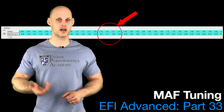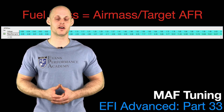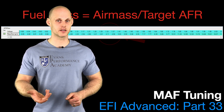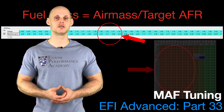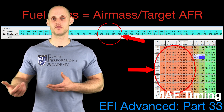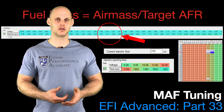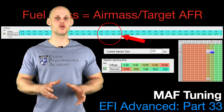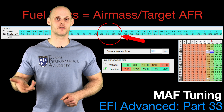The ECU takes that signal and looks up in a two-dimensional table what the particular air mass is coming into the engine. We've talked about this equation — fuel mass equals air mass divided by target air-fuel ratio — several times in our EFI advanced training course. So if we know the air mass we're measuring and we know the target air fuel, such as 14.7:1 stoichiometric at idle and part throttle, it knows the fuel mass. We then establish the injector flow rate, dead time or offset values, and short pulse width tables, and it converts the fuel mass into an injector pulse width to fuel the engine and hit the target air fuel.